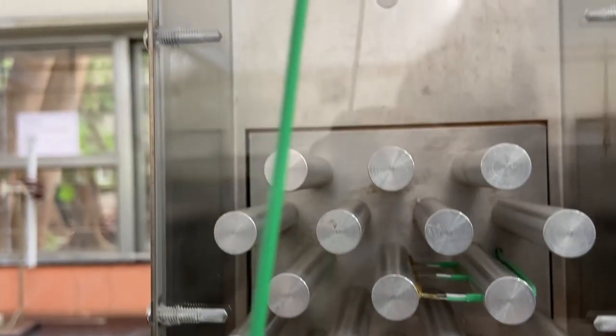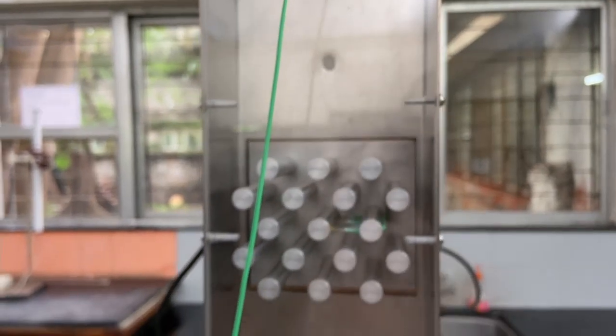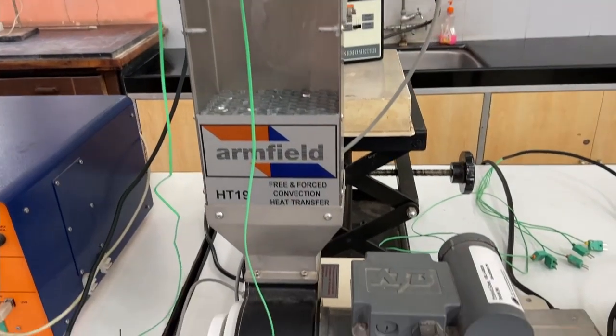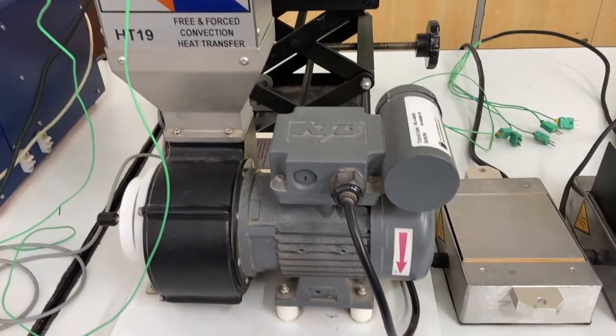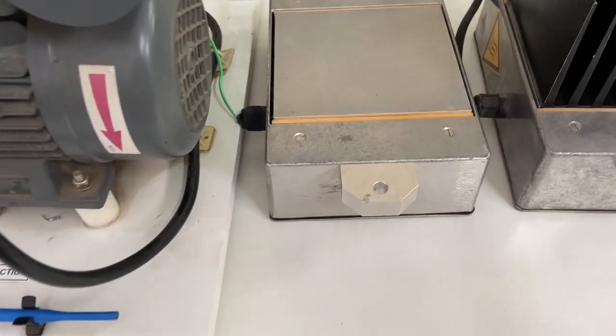After a steady state temperature has been reached, check for the flow rate if it has reached a steady value and if it is fluctuating about a mean. Note down the current voltage, the temperatures at various sensors and the flow rate readings.